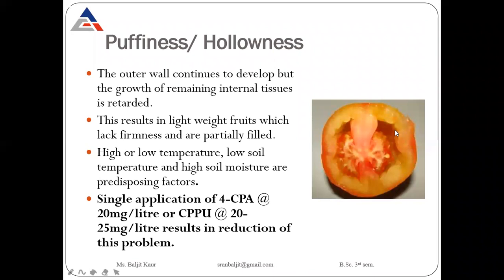Puffiness or hollowness: sometimes fruits are hollow inside. The outer wall continues to develop but the growth of remaining internal tissues is retarded, because of which the fruits are light in weight, lack firmness, and are partially filled. This is due to factors like high temperature, low temperature, low soil temperature, and high soil moisture. To control puffiness or hollowness in tomatoes, we can apply 4-CPA or CPPU.